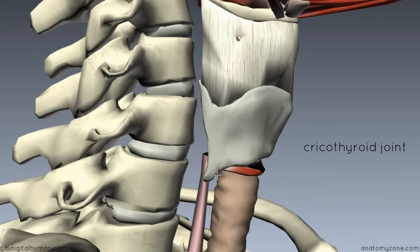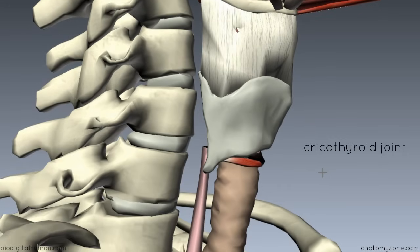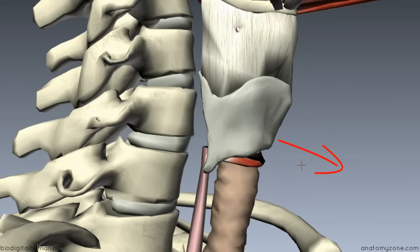The inferior horn of the thyroid cartilage articulates with a facet on the lateral aspect of the cricoid cartilage. When this muscle contracts, you can see that it pulls the thyroid forward, and the oblique part can pull it downwards. So you get forward and downward movement of the thyroid cartilage when the cricothyroid muscle contracts — it's pulled downwards and forwards.